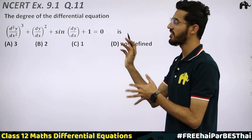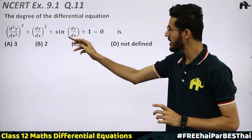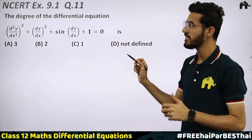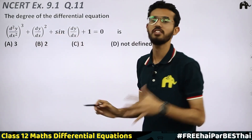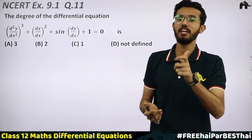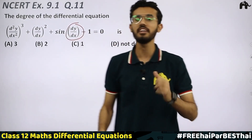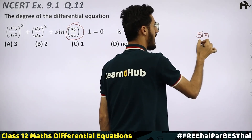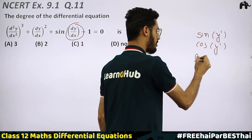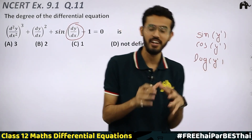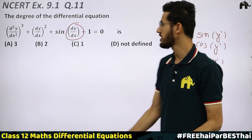Question 11: The degree of the differential equation (d²y/dx²)³ + (dy/dx)² + sin(dy/dx) + 1 = 0. First check if the degree is defined. Here dy/dx, i.e., a derivative, is coming inside the sine function. Whenever a derivative — y′, y″, or any derivative — appears inside sin, cos, or log, the degree is not defined.